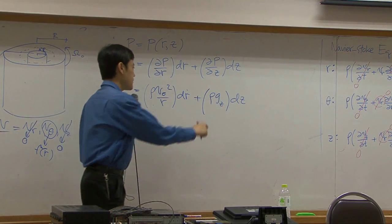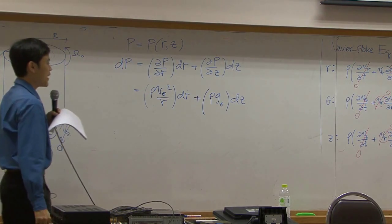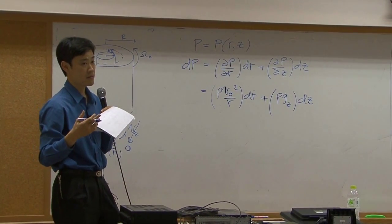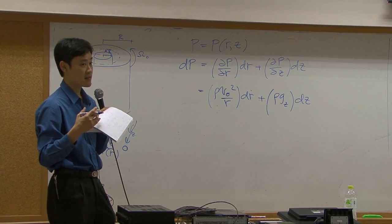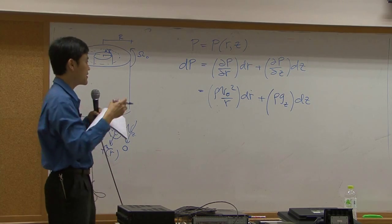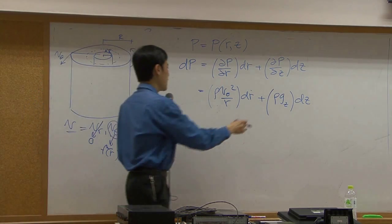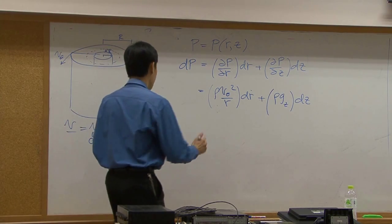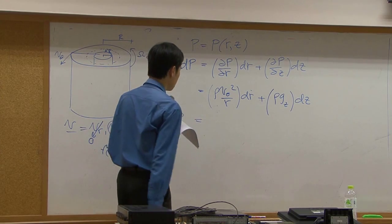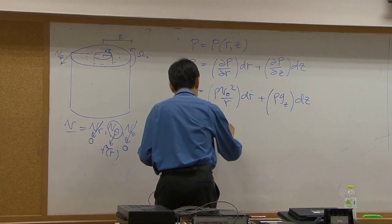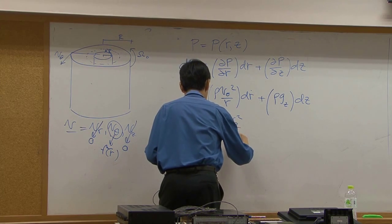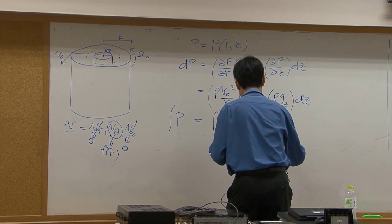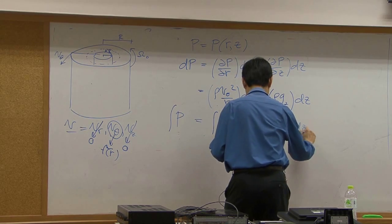I just keep gz here because we have not defined yet whether z direction is going up or down. It doesn't matter, because direction of flow in this case is not related to z direction. You can take z to be up or down; the sign will correspond to that. If you want to get pressure, simply just integrate it. So you have integral of rho v zeta squared over r dr plus integral of rho gz dz.